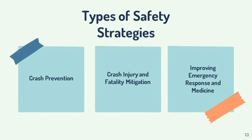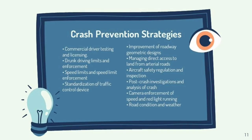These are the three types of safety strategies: 1. Crash Prevention; 2. Crash Injury and Fatality Mitigation; 3. Improving Emergency Response and Medicine. Examples of crash prevention strategies include: commercial driver testing and licensing, drunk driving limits and enforcement, speed limits and speed limit enforcement, standardization of traffic control devices, improvement of roadway geometric designs, managing direct access to land from arterial roads, aircraft safety regulation and inspection, post-crash investigations and analysis of crashes, and camera enforcement.